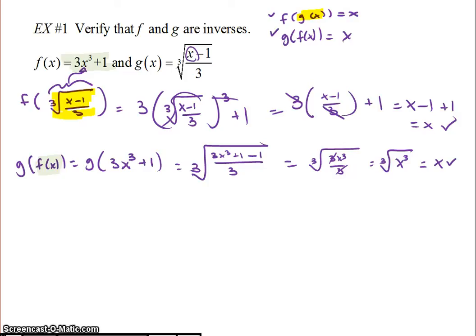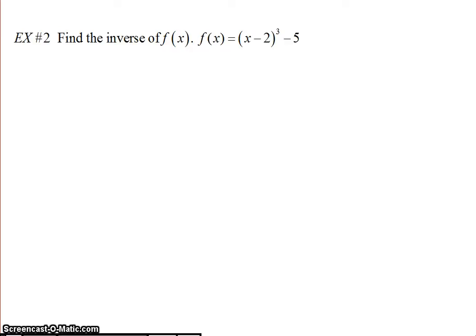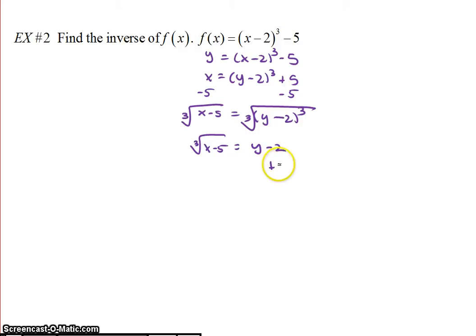Okay, so move on to example number 2. In example number 2, we want to find the inverse. So to find the inverse, we're going to write for f of x, we're going to replace it with y. And then the next step is to swap x and y. So x equals y minus 2 cubed plus 5, and we're just going to solve for y. I'm going to subtract 5 from both sides, so I have x minus 5 is the quantity of y minus 2 cubed. To undo something cubed, I take the cube root of both sides. So I have the cube root of x minus 5, and the cube root and the cube cancel each other out, equals y minus 2. I'm going to add 2 to both sides. Now this 2 is outside the cube root. So cube root of x minus 5 plus 2 equals y. And this is my f inverse. So f inverse of x is the cube root of x minus 5 plus 2. So that is how we have found the inverse.